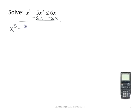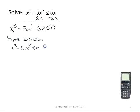So that gives me x³ - 5x² - 6x ≤ 0. Now I want to find my x-intercepts or find the location of my zeros. So I want to set this equal to zero and solve it.